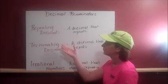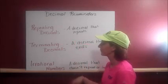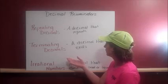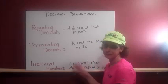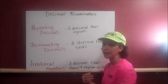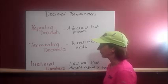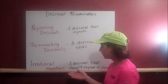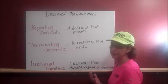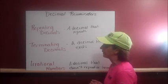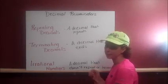A repeating decimal is a decimal that repeats. A terminating decimal is a decimal that ends, a decimal that has eventually nothing left over. And an irrational number is a decimal that doesn't repeat and doesn't end. Let's look at some examples of each of them.